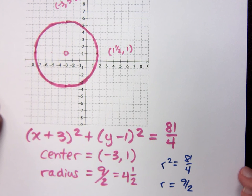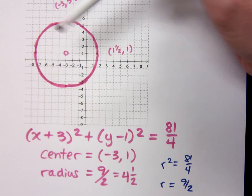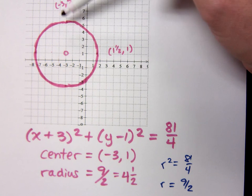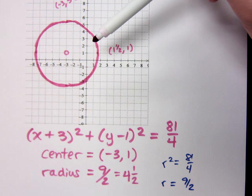That wasn't too bad, was it? You identify the center. You identify the radius. What do you plot first? The center. And you go up, down, left, and right, however many units that radius happens to be. Thank you.